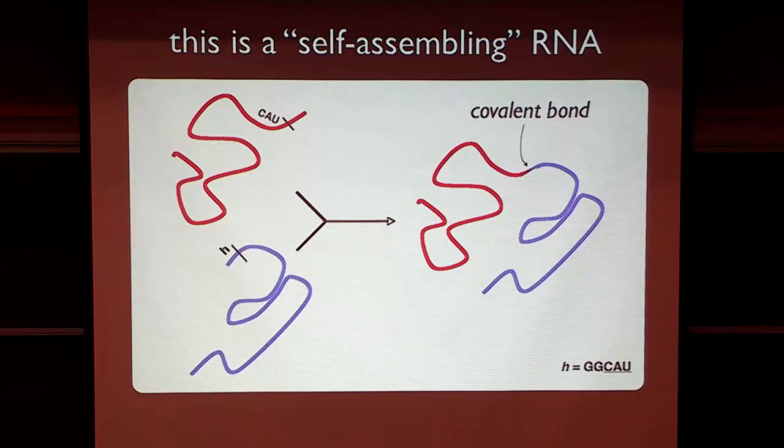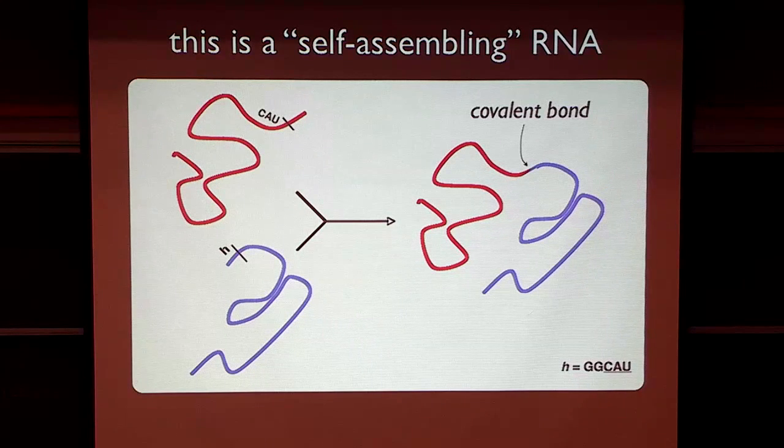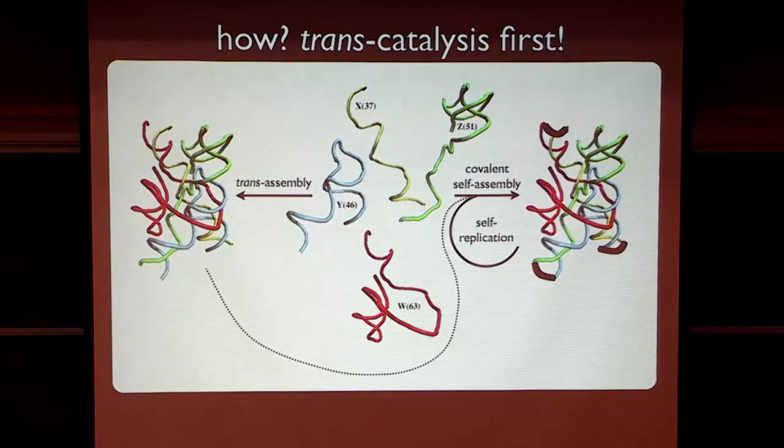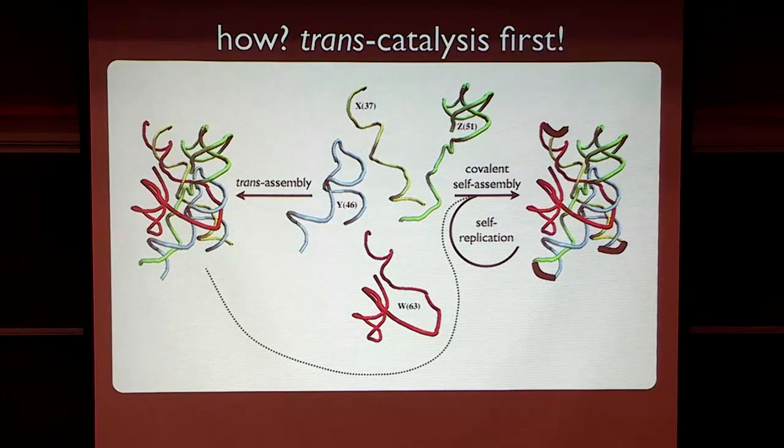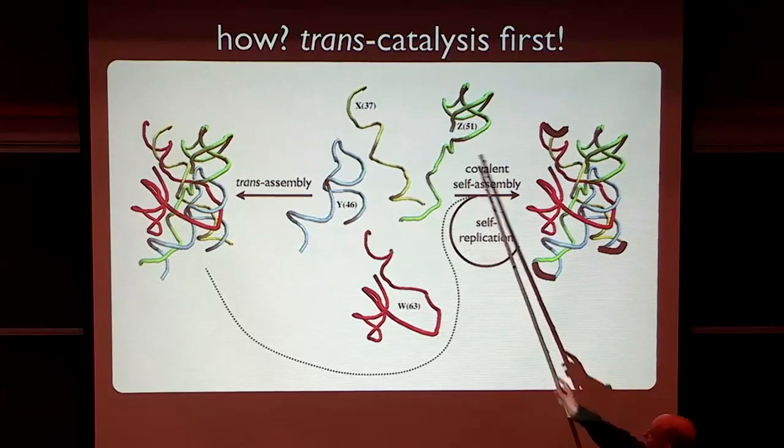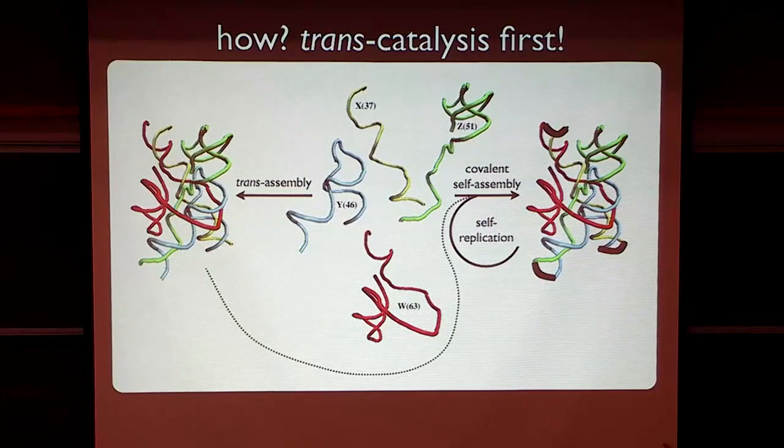So what's happening here is that this is a self-assembling RNA. The two halves are assembling the whole. And if you look at the four-piece notion, we have these four pieces, W, X, Y, and Z, and they're all coming together and making themselves.